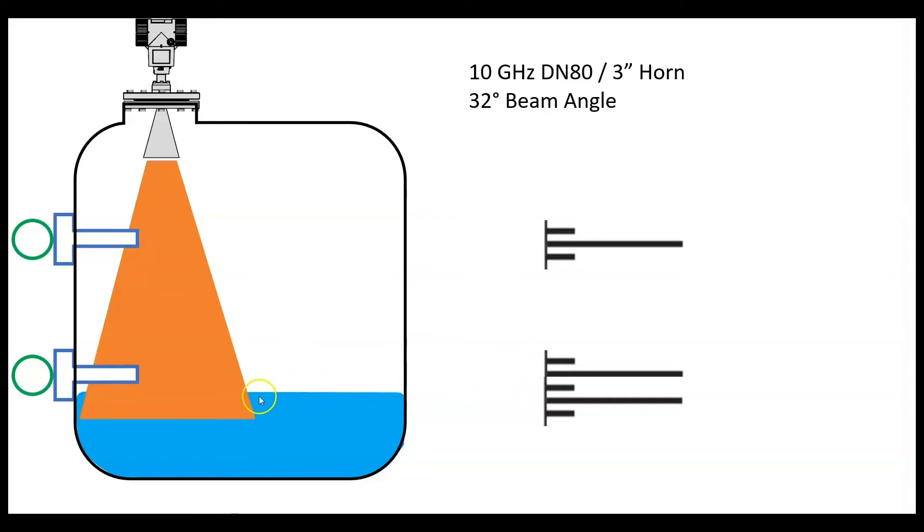What you as a user could do is tell the radar, ignore this, that's not the level, that's a thermal well, and ignore this, that's a thermal well, that's not the level. And the radar goes on and says, okay, I'm going to ignore these two signals reflections I get from these, and you go on your way.